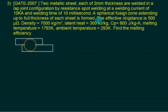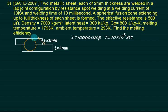Two metallic sheets each of 2 mm thickness. So we have this thickness is 2 mm as well as this thickness is also 2 mm. In a lap joint configuration by resistance spot welding at a welding current of 10 kilo ampere. So I is 10,000 ampere. Welding time is 10 millisecond, 10 into 10 to the power minus 3 seconds. A spherical fusion zone, so this one is spherical fusion zone extending up to full thickness.